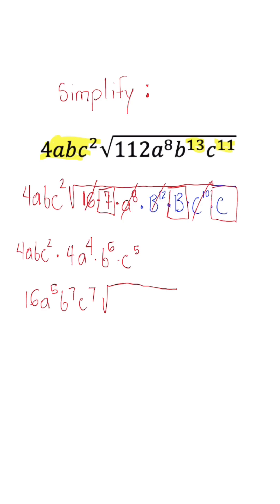And then what's left under the radical, we already highlighted. So all we need to do is put them together. So under the radical, we're going to have 7bc. And this will be our final expression once we simplify.